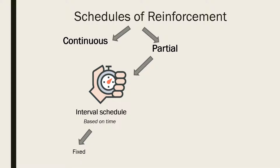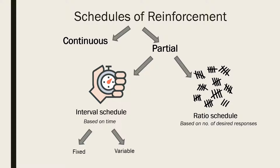Interval schedules may specify a fixed time period between reinforcers, known as a fixed interval schedule, or a variable time period between reinforcers, a variable interval schedule. Ratio schedules require a certain number of operant responses — for example, 10 responses — to produce the next reinforcer. The required number of responses may be fixed from one reinforcer to the next, a fixed ratio schedule, or it may vary from one reinforcer to the next, called a variable ratio schedule.